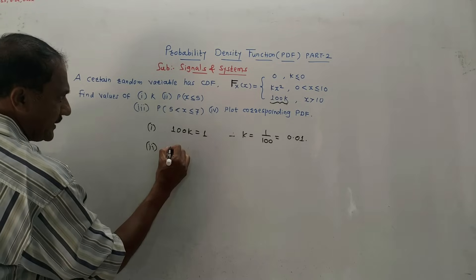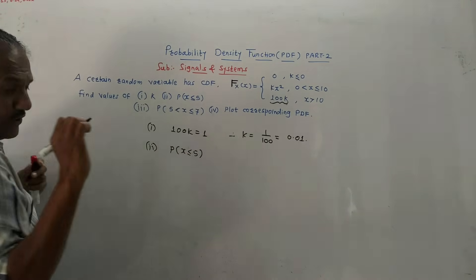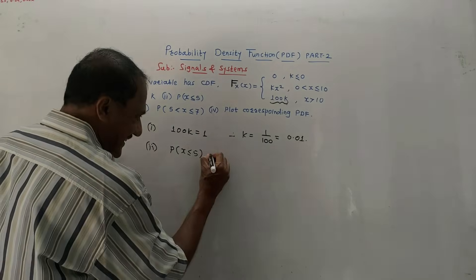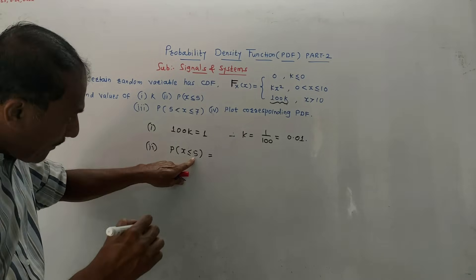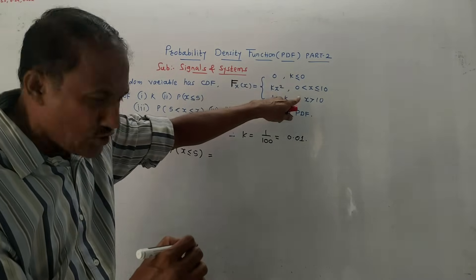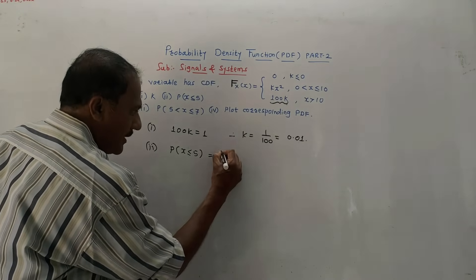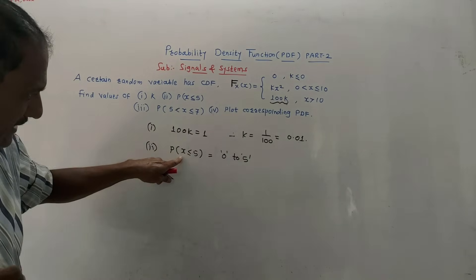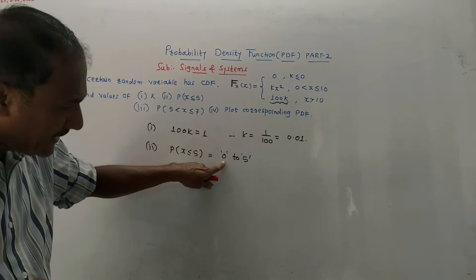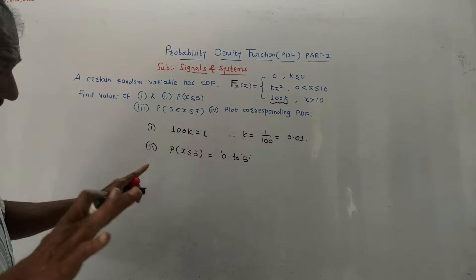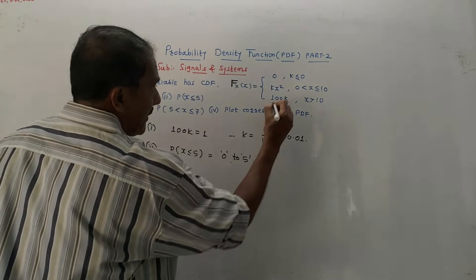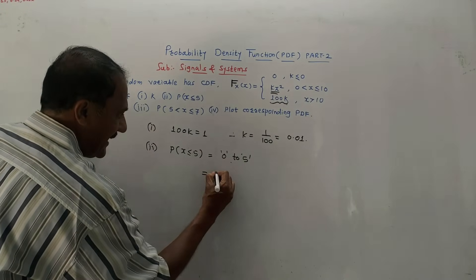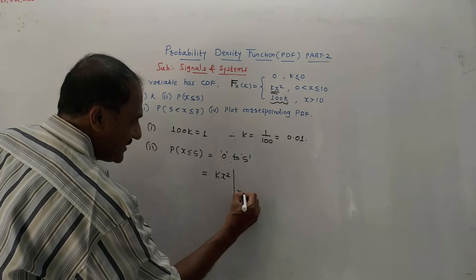For the second part, calculate probability X less than or equals to 5. When PDF was given we performed integration; here CDF is given. The available lower limit is 0, so we calculate probability from 0 to 5. In the range 0 to 10 the CDF expression is K·X², so we evaluate K·X² at X equals to 5.